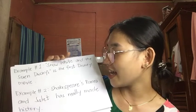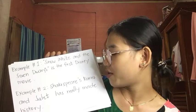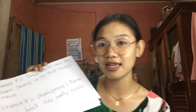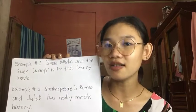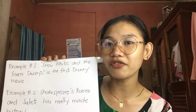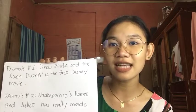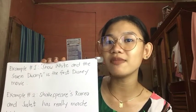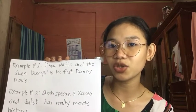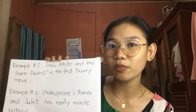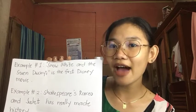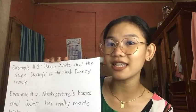Rule number twenty: titles of books, movies, songs, etc. require a singular verb. For example, 'Snow White and the Seven Dwarfs is the first Disney movie.' Second: 'Shakespeare's Romeo and Juliet has really made history.' In example one, the subject 'Snow White and the Seven Dwarfs' is a movie title, so we use singular verb 'is.' In example two, 'Romeo and Juliet' is a book/play title, so we use 'has' as the third person singular present tense.